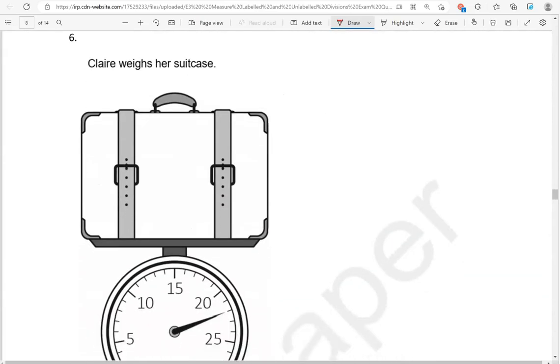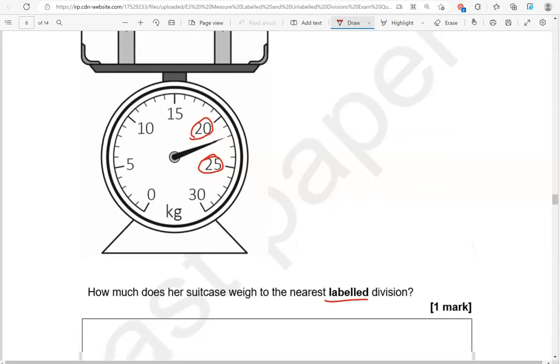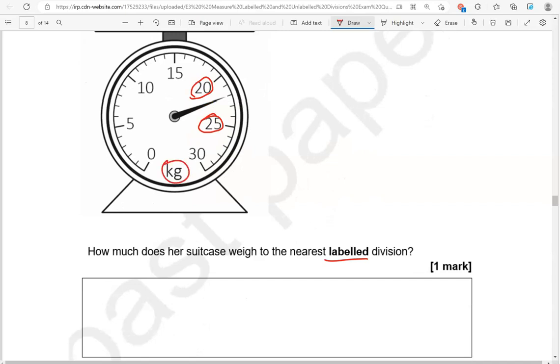Claire weighs her suitcase. How much does her suitcase weigh to the nearest unlabeled division? That is in between 20 and 25. It is closer to 20, though, than to 25. So that's why we're going to say 20 kilograms.